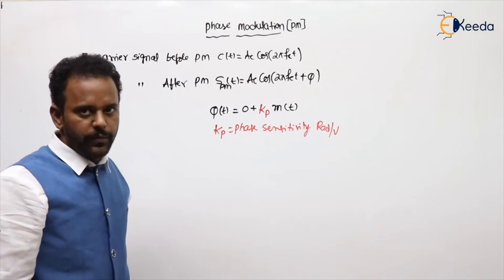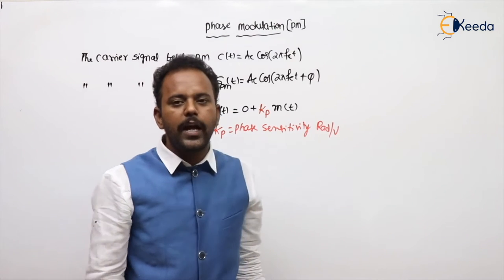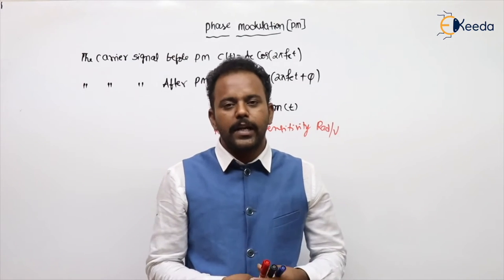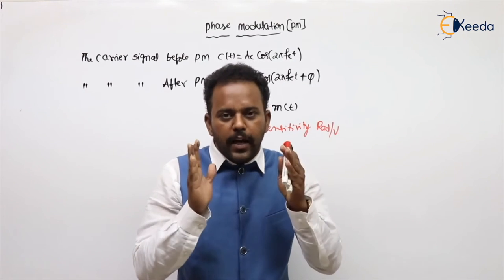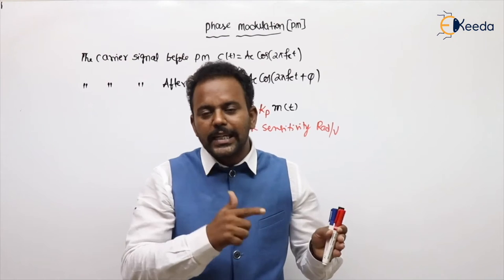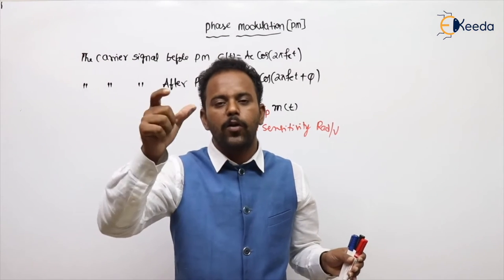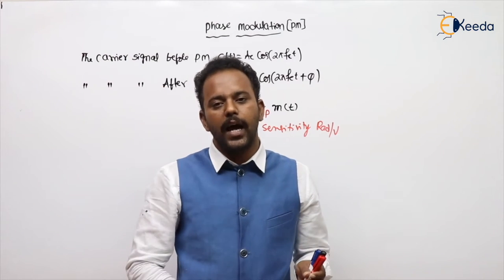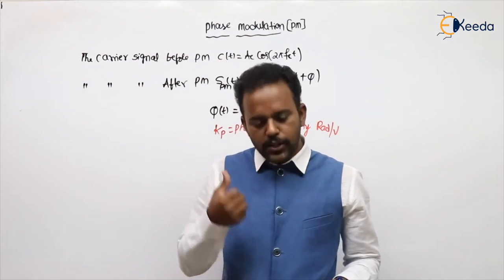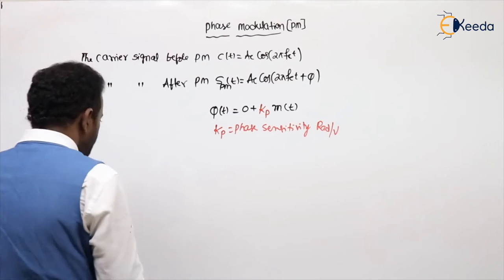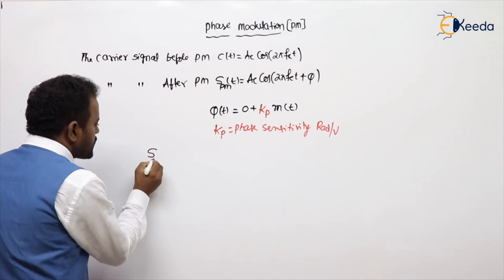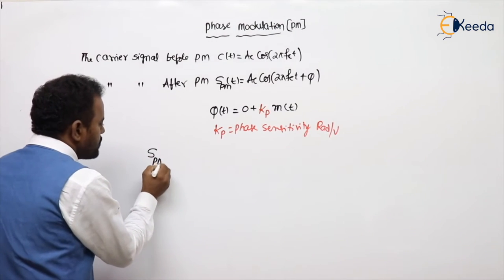Phase sensitivity kp will specify how much phase has to be changed per 1 volt change in the message signal amplitude. Previously I told you about kf. What is kf? kf will specify how much change in carrier frequency per 1 volt change in the amplitude — like kp here. Now substitute that φ(t) value in the above equation, and finally you will get the general expression for phase modulation.